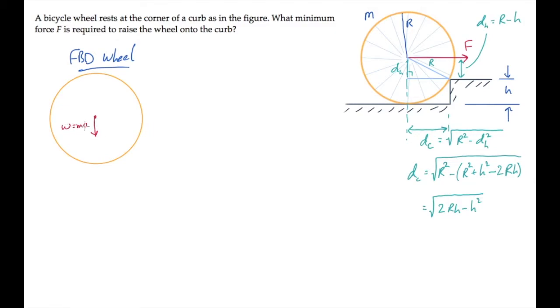There's a normal force directly below it where the wheel touches the ground. There's the horizontal force F that acts at the center. And finally, there's a force that the curb exerts on the wheel. I'll draw its components here, Rx and Ry.